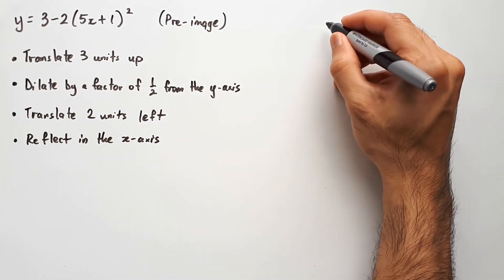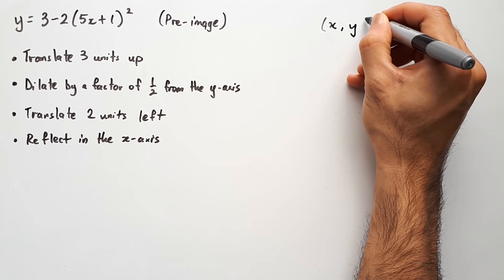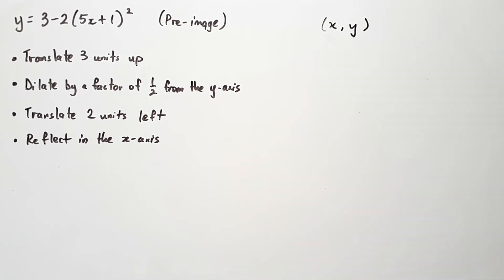The first step is the same, write out (x, y) as your generic starting coordinate. And as an important note, this will always be the same thing that you start with, no matter what your pre-image equation looks like. It's always just (x, y), nothing else.